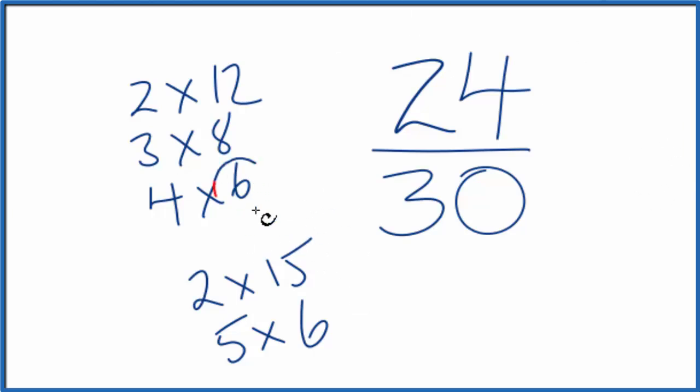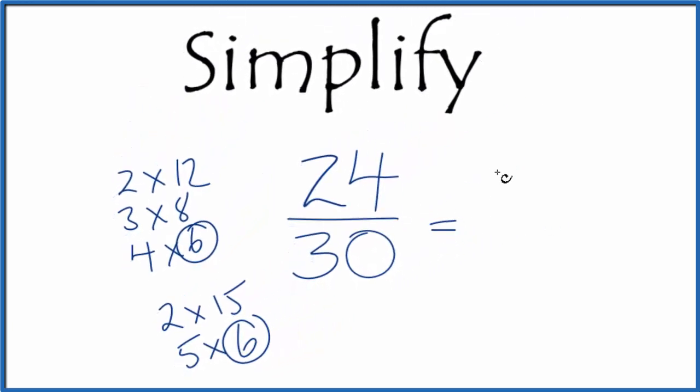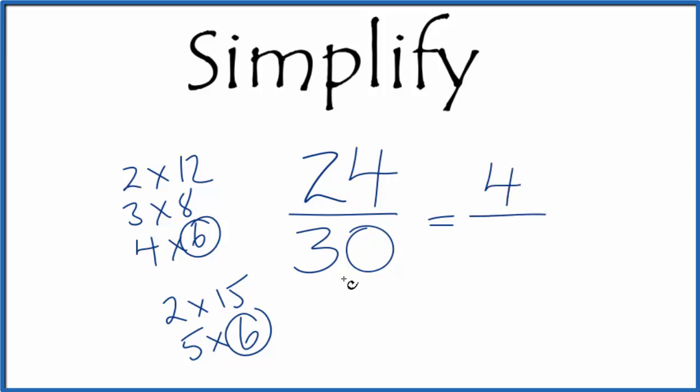I can see that 6 goes into both 24 and 30. So 24 divided by 6, that's 4, and 30 divided by 6, that's 5. When we reduce or simplify 24 thirtieths, we get 4 fifths. These are equivalent fractions.